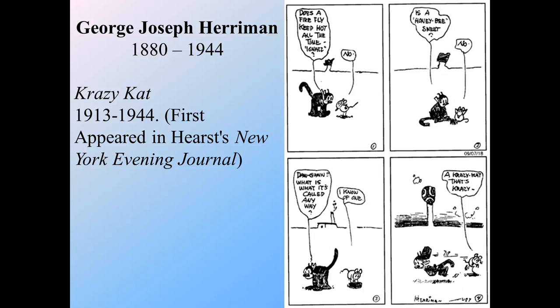We also have George Joseph Harriman, whose famous work includes Krazy Kat and Ignatz Mouse. It ran for just over 30 years and first appeared in Hearst's New York Evening Journal. This is really the predecessor to Tom and Jerry — it's about a cat and a mouse, and sometimes a dog, who are highly antagonistic toward each other. The comics often ended with Ignatz throwing a brick at Krazy Kat's head — a very familiar theme of that kind of cartoon violence, or even the mouse getting the upper hand.